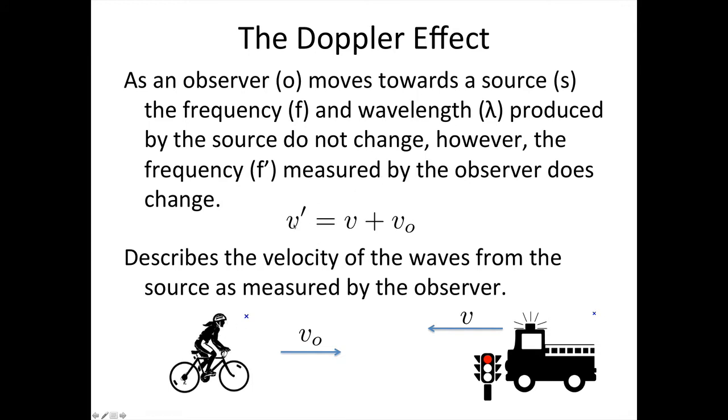We can see that the velocity that she measures the sound waves travelling towards her will be given by the velocity of sound plus her velocity, which is V subscript O, the velocity of the observer.